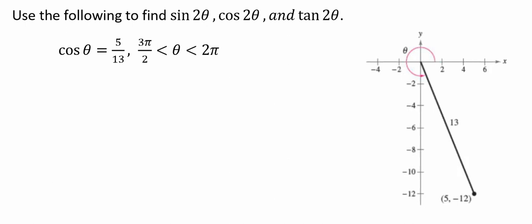We've been given the cosine of theta equals 5 over 13, where theta is between 3 pi over 2 and 2 pi, which puts it in the fourth quadrant.